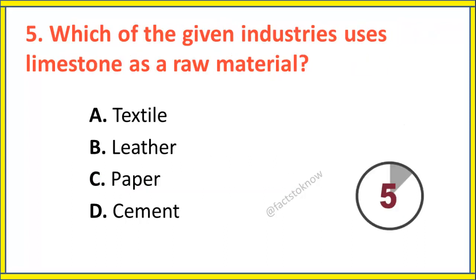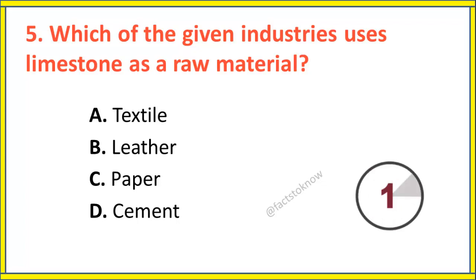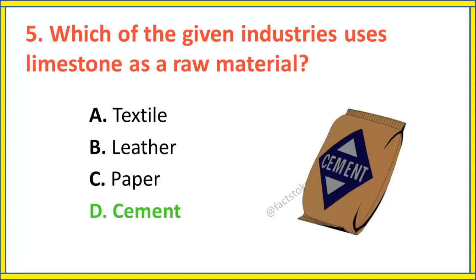Question number 5. Which of the given industries uses limestone as a raw material? The correct answer is option D: Cement.